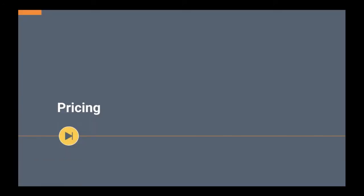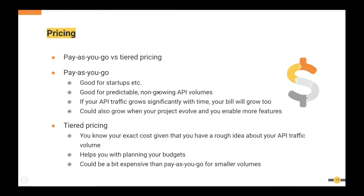Until now I was talking about features to check, but features are not the only thing that matters — price matters a lot. There are normally two pricing models: pay-as-you-go and tiered pricing. In the pay-as-you-go model, you pay for the number of API calls you make. At the beginning it might look very attractive because your starting cost will be very low, especially if you're a startup or have predictable, low API traffic.